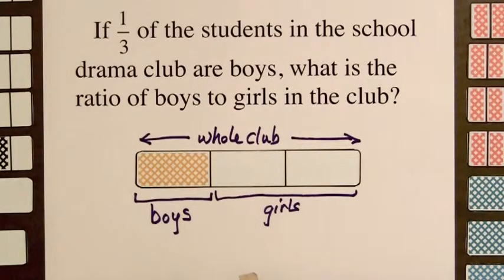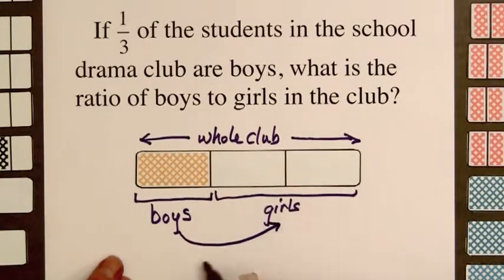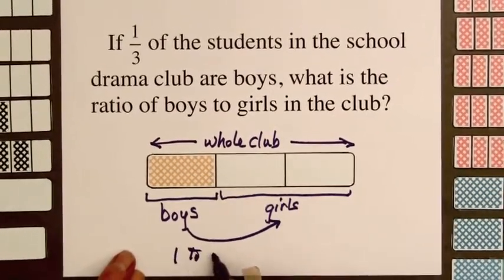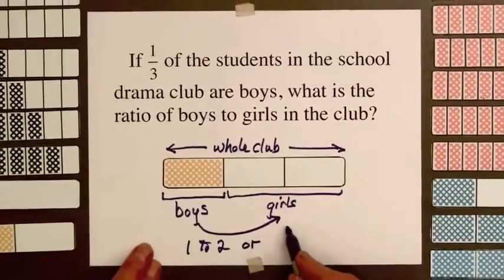And the ratio of boys to girls is 1 to 2, or the fraction 1 half.